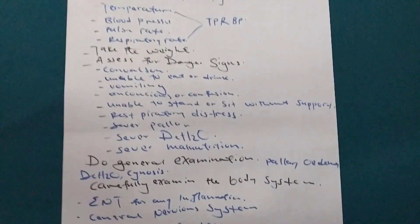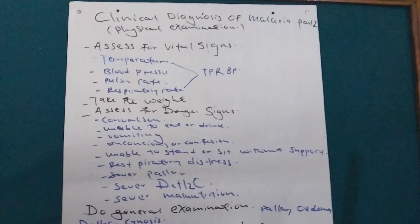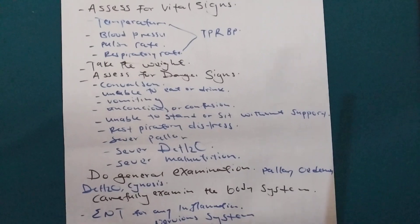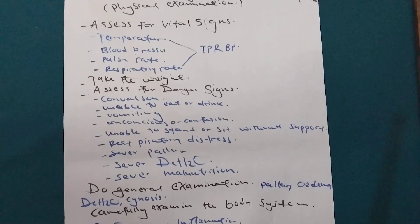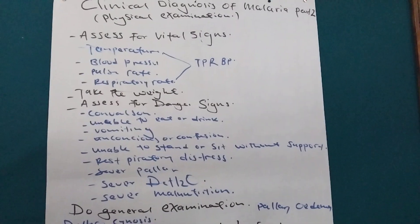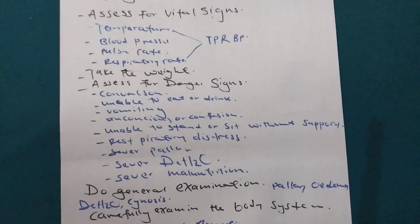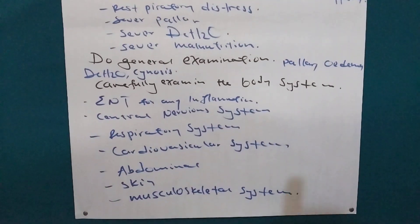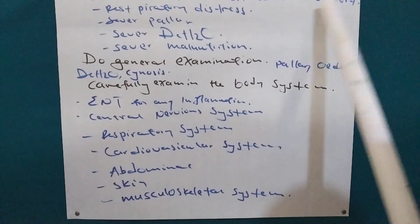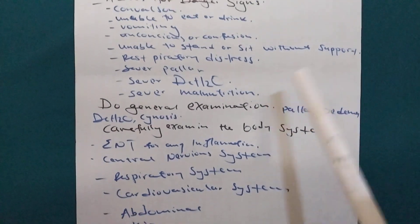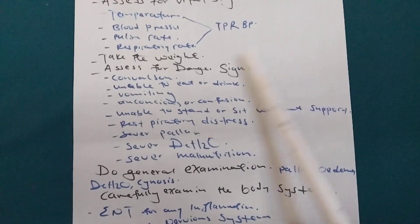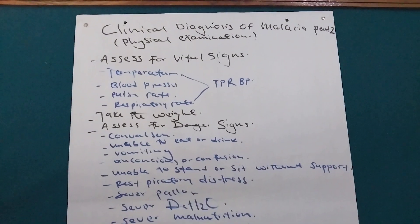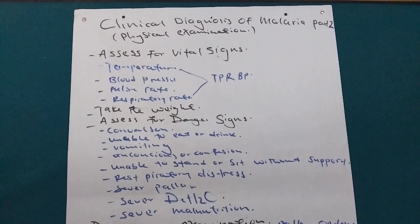So, this is the clinical diagnosis of malaria in part two. We do the in-depth physical examination to understand better. In the next part we also do the laboratory test to confirm malaria, then manage accordingly. Because of drug interactions, other drugs cannot be combined with others — that is why you have to first rule out most of these conditions and then manage effectively. That is all. Thank you for watching, and see you in the next one.